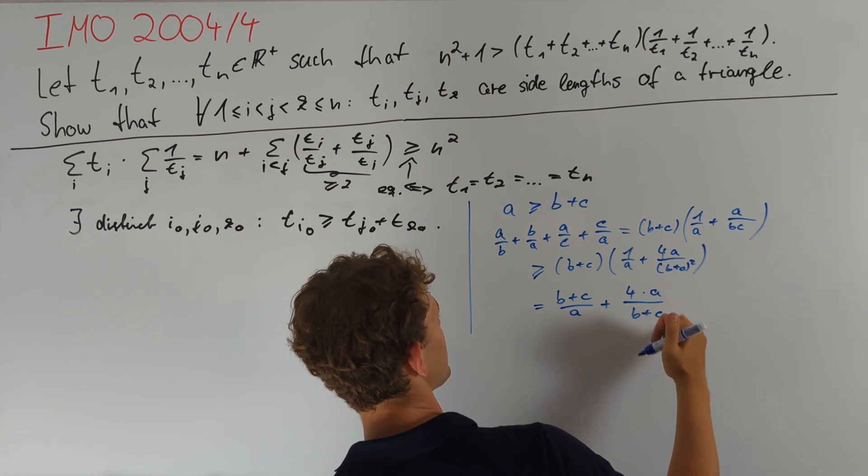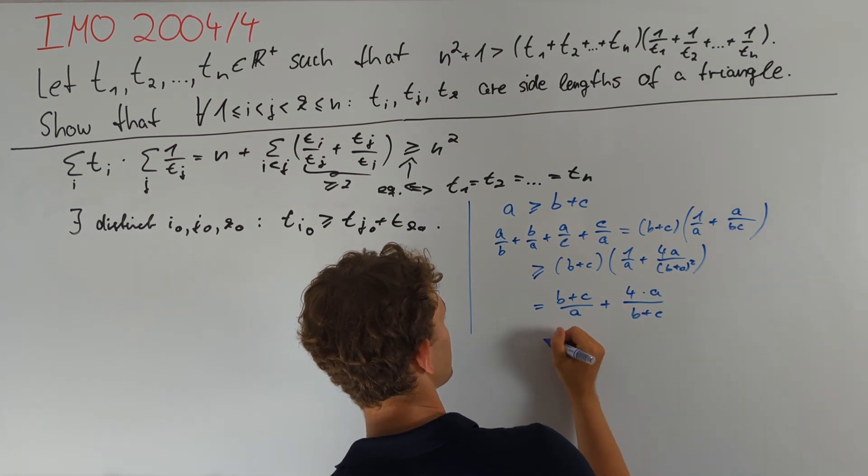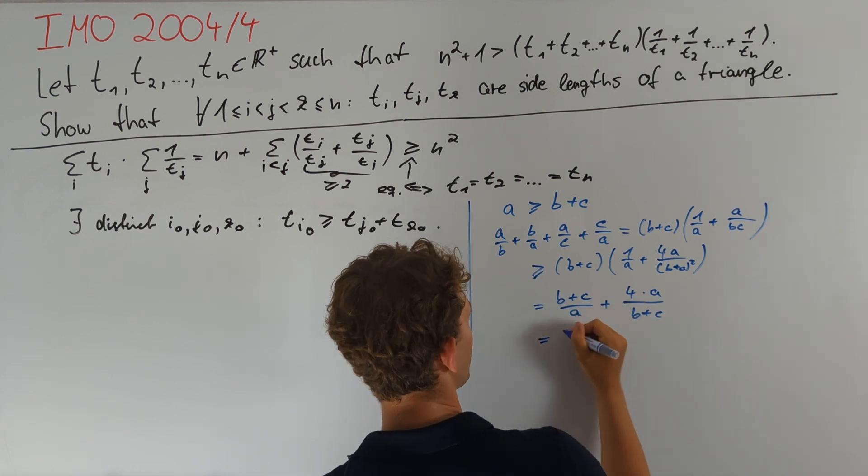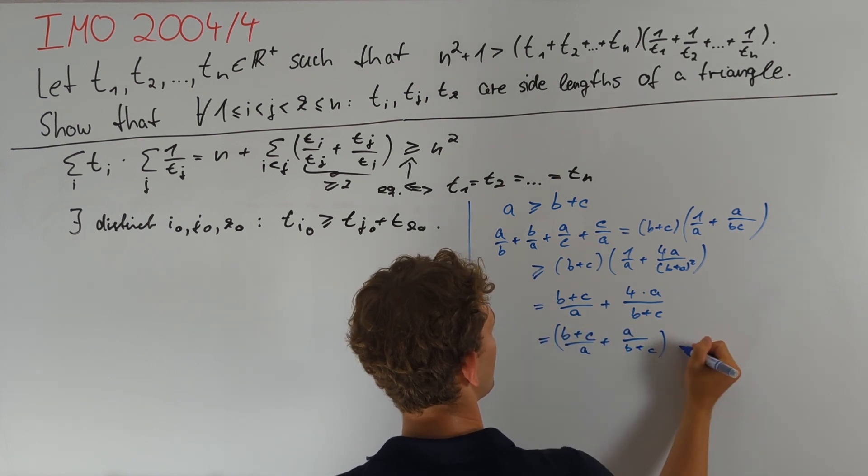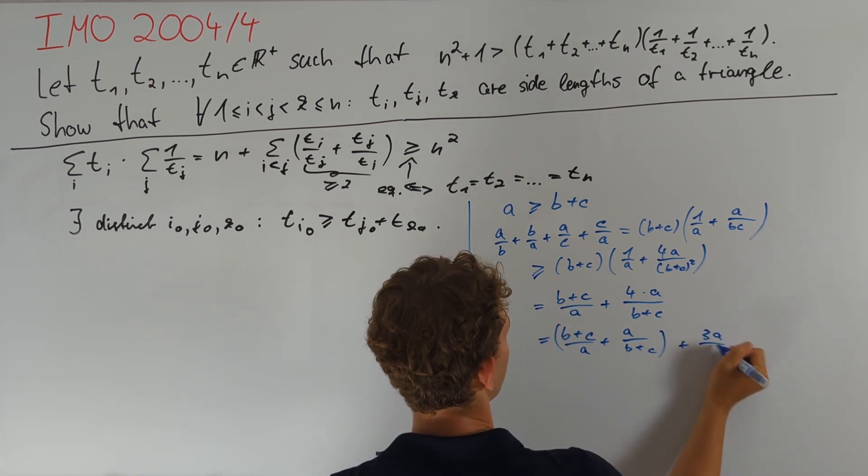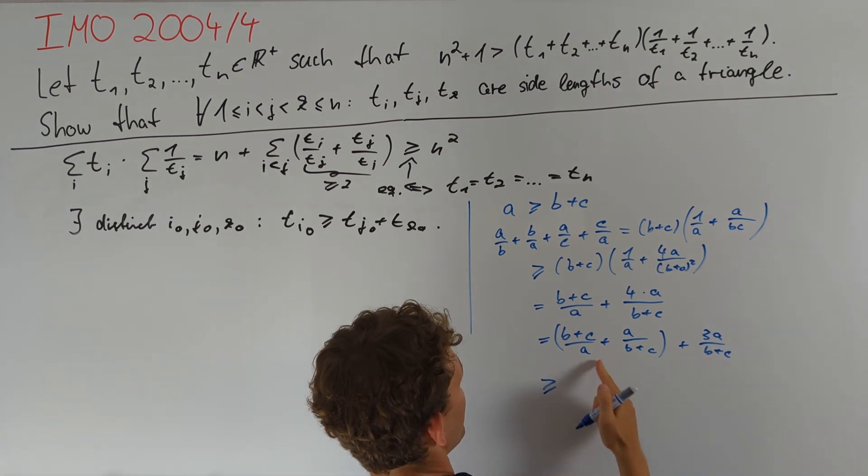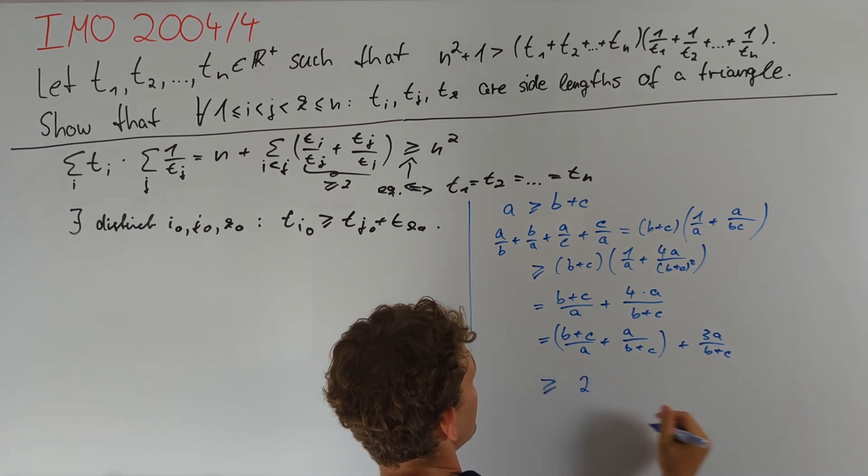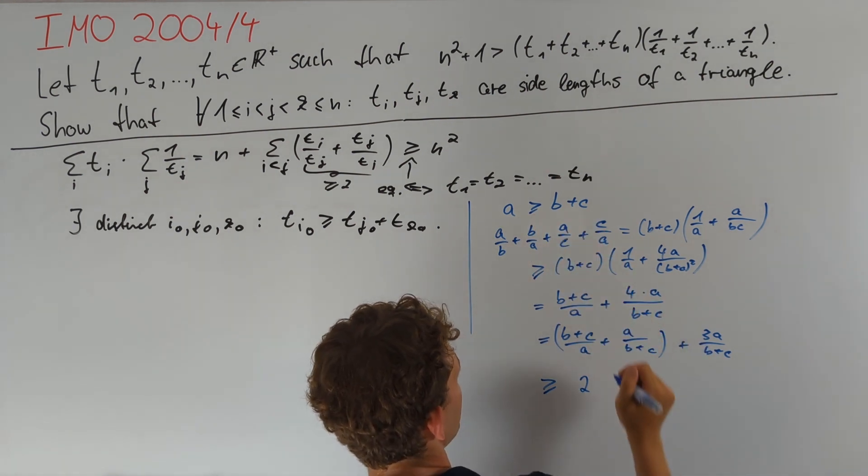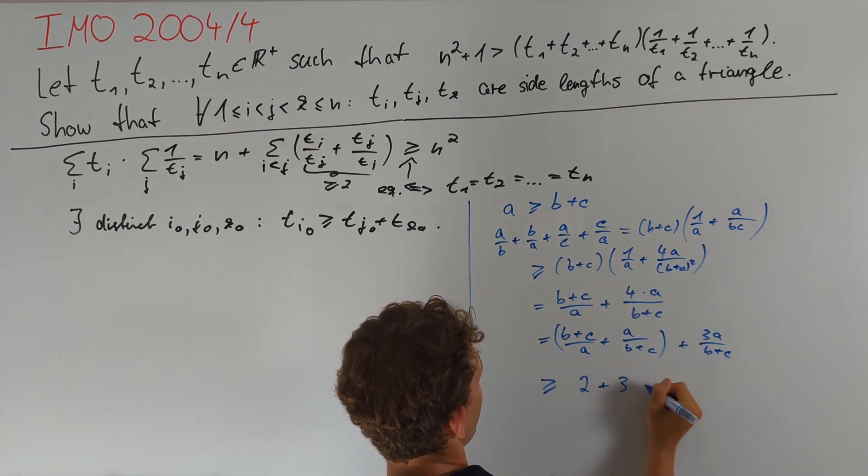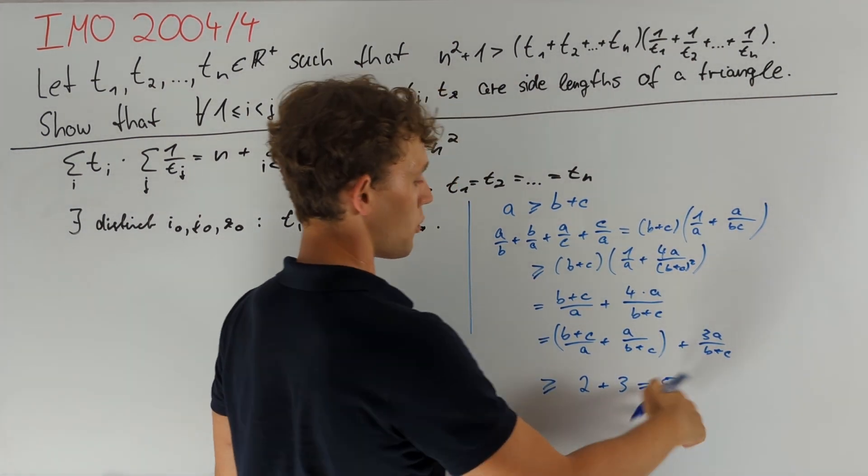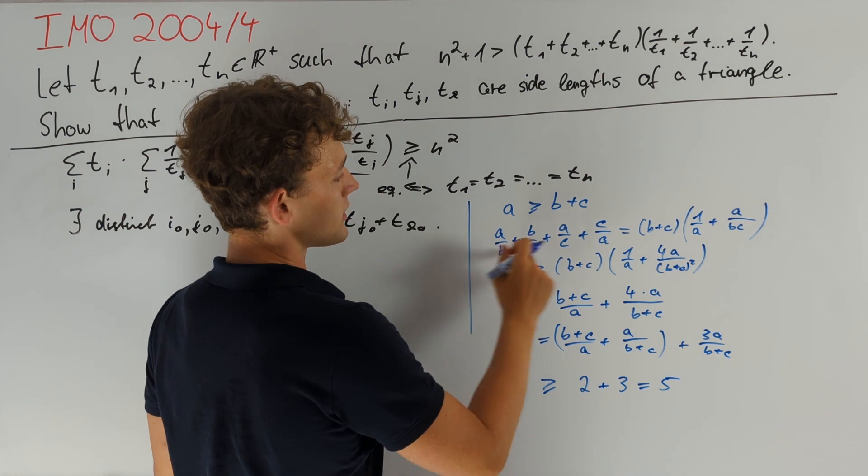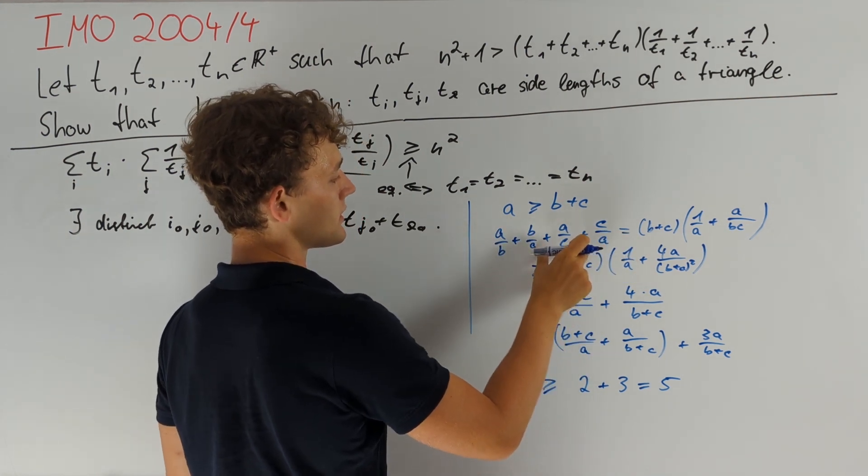To get the equality case exactly where a = b + c, we split this term off, rewriting as (b + c)/a + a/(b + c) + 3a/(b + c). We can bound the first term from below with 2, and the second one is at least equal to 3 because of our condition. Therefore all of this can be bounded from below with 5, and 5 is 1 more than 4, which is the lower bound we would have gotten with our previous strategy.